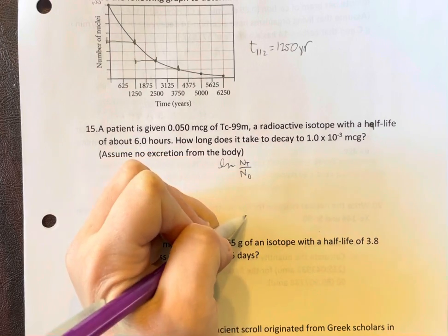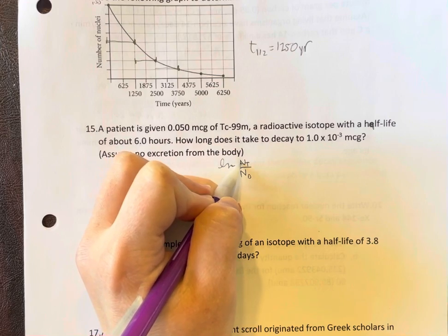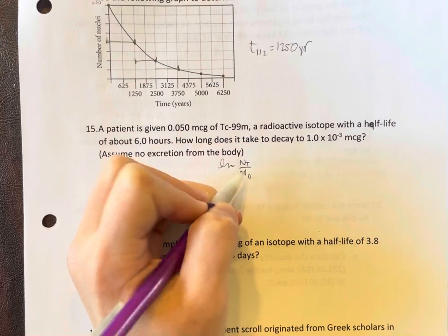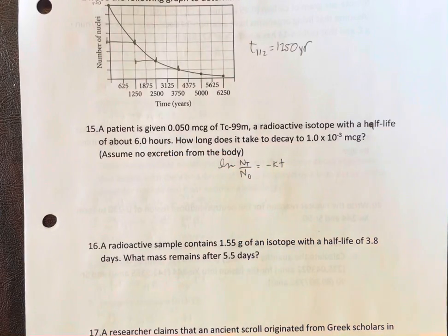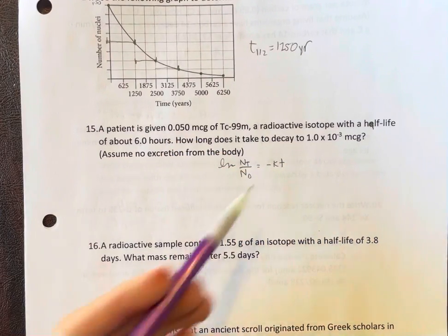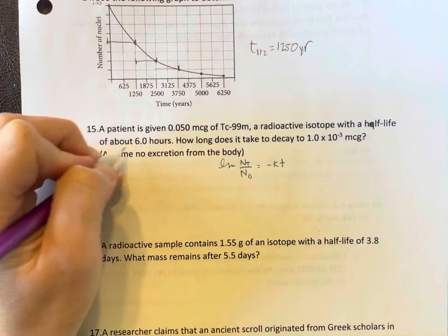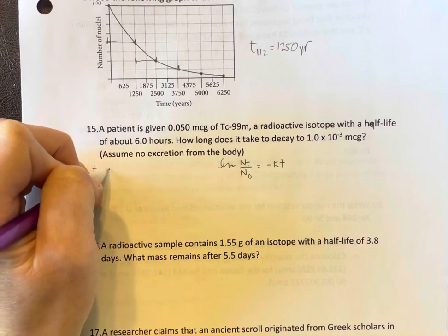So nucleus at time t versus starting equals negative kt. We need to know what k is, so we can figure out k because we're given the half-life.